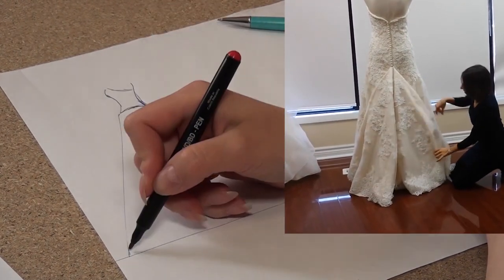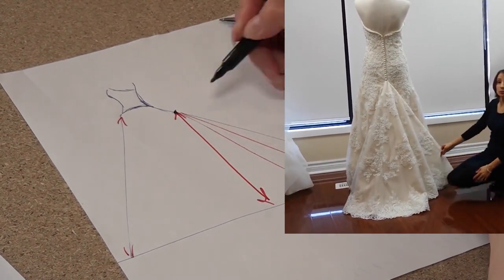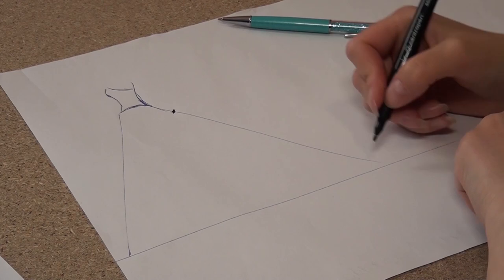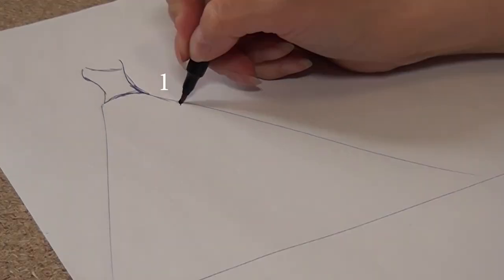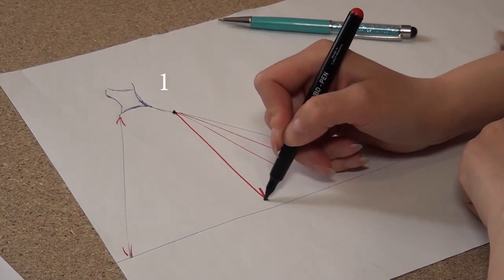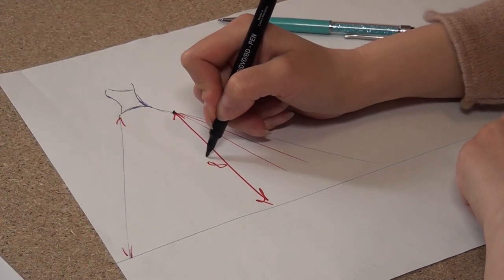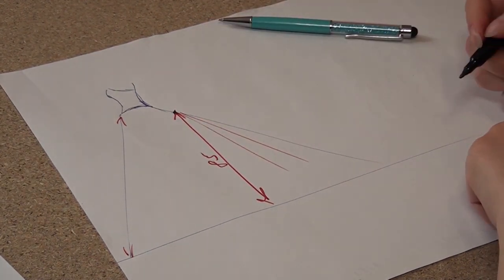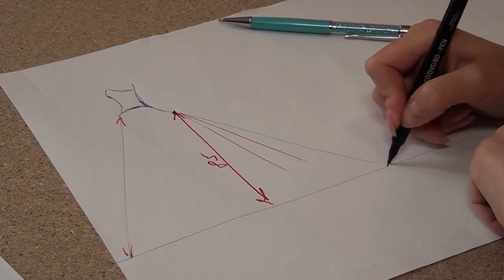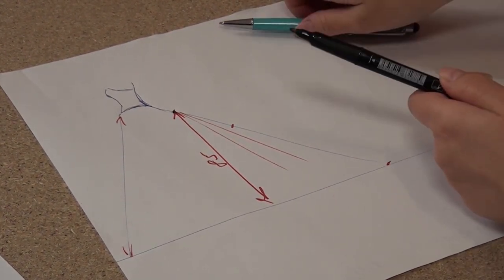In this video I want to explain how to find and mark the point for the bustle. First, I'm measuring the distance from this point to the bottom of the skirt. For example, the distance is 85 centimeters. After that, I measure this 85 centimeters from the bottom of the skirt along the line of the middle of the back of the skirt.